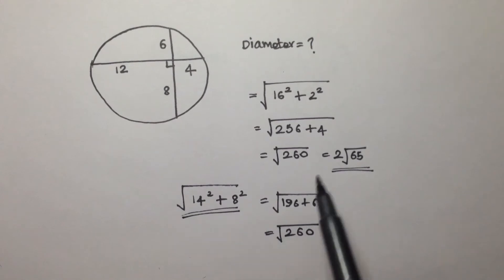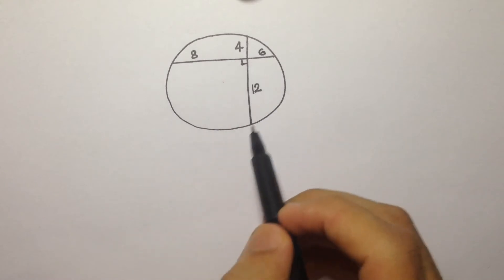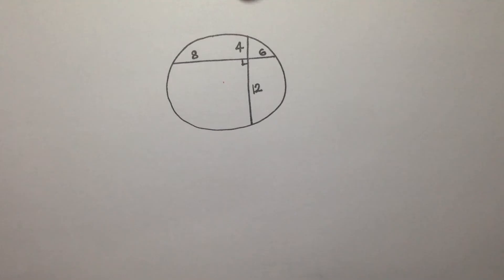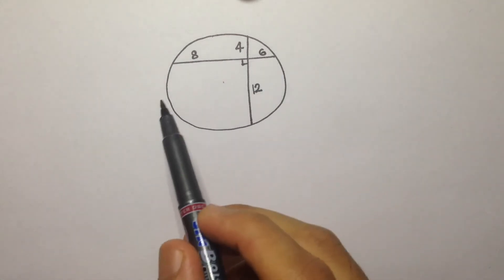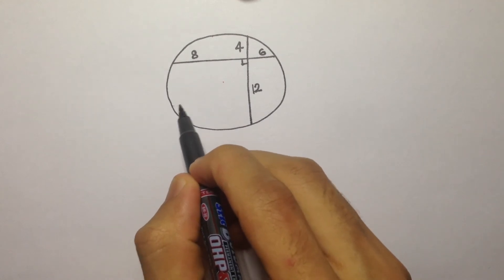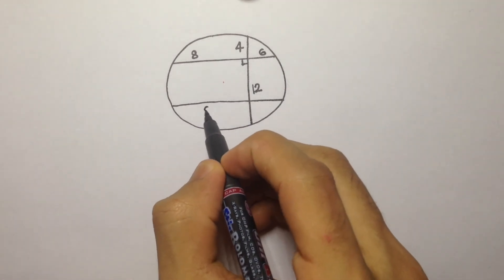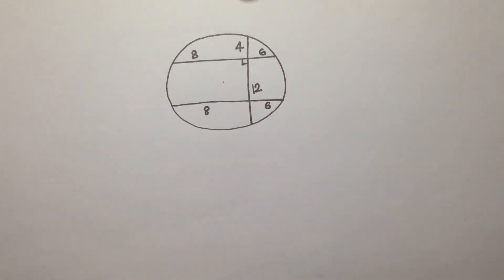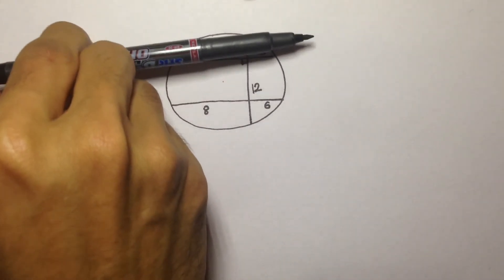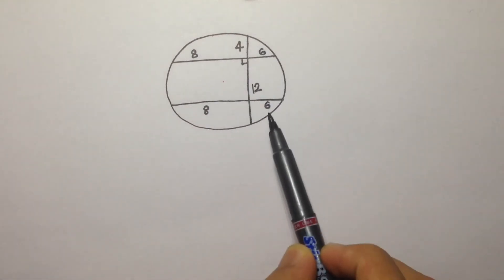Now I'll explain how we get this result geometrically. This figure looks almost like the circle we had. The center is approximately here. If we take the reflection of one chord across the diameter, we can draw another chord parallel to the original with the same length. So this reflected chord will again have lengths 8 and 6 on either side.